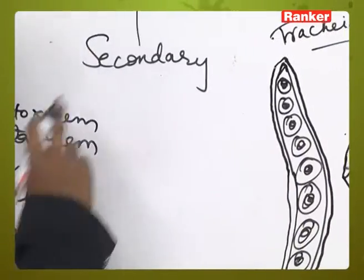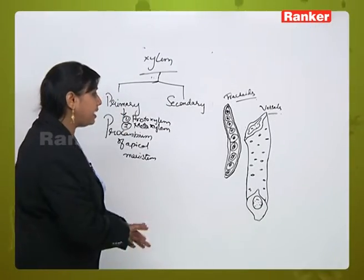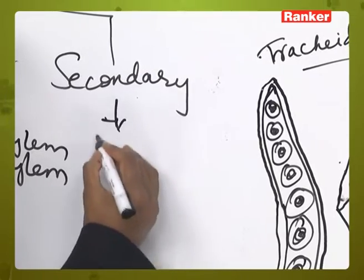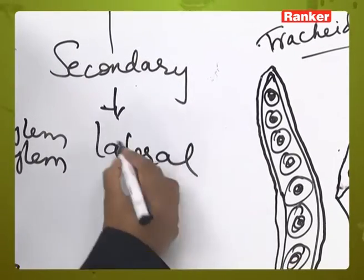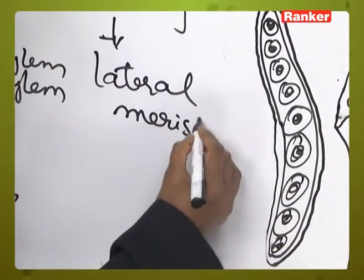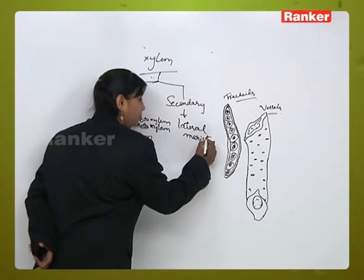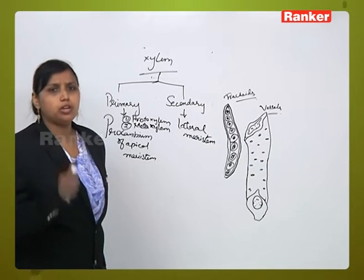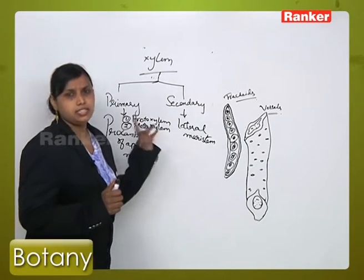Another one is secondary xylem. Where do we get the secondary xylem? If the xylem tissues are occurring from the lateral meristem, if the initiation of xylem tissue occurs from the lateral meristem, then that type of tissues are called the secondary xylem.